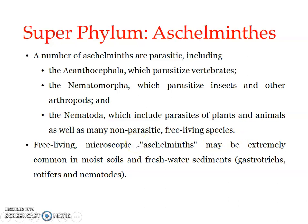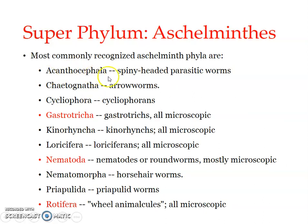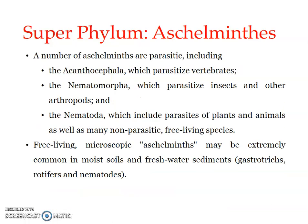A number of Aschelminthes are parasitic forms. For example, Acanthocephala — the first phylum under the superphylum Aschelminthes — parasitizes vertebrates. Phylum Nematomorpha parasitizes insects and other arthropods. Nematoda includes parasites of plants and animals as well as many non-parasitic free-living species. Free-living microscopic forms may be extremely common in moist soils and freshwater sediments. This group includes gastrotrichs, rotifers, and nematodes.